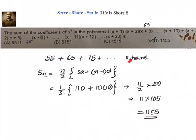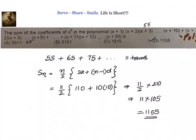That means we see another arithmetic progression here where we have 11 terms. The first one is 55, second one is 65, third is 75, up to 11 terms. We can apply the formula: S of n equal to n by 2 into 2a plus n minus 1 into d, with a equal to 55 and common difference equal to 10. So the sum of coefficients of x power 9 in the given polynomial is 11 by 2 into 110 plus 10 into 10, which is equal to 1155, and our answer is option D.